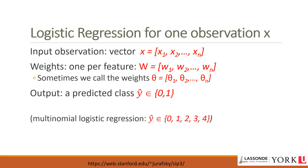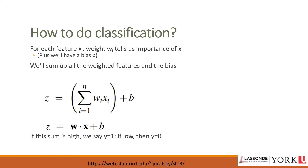To understand the regression elements for one observation x: the input is the feature vector x from x_1 to x_n, each feature is assigned a weight from a vector w (w_1 to w_n), and we calculate the output y-hat — the predicted class, which is 0 or 1 for binary classification, or 0 to k for multinomial. There is also a bias term, also called the intercept, which is a real number added to the weighted inputs.